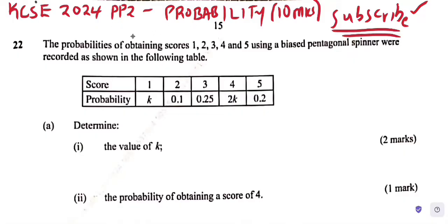So the question says: the probabilities of obtaining scores 1, 2, 3, 4, and 5 using a biased pentagonal spinner were recorded as shown in the following table. So this is your score 1, 2, 3, 4, 5, and the probabilities are k, 0.1, 0.25, 2k, 0.2. Always remember, if it's biased, it does not have equal probability.